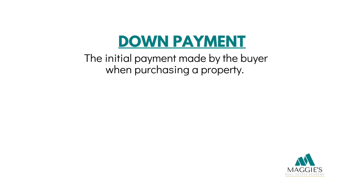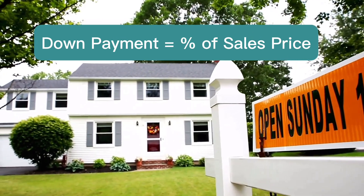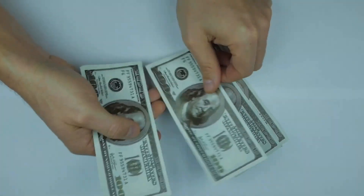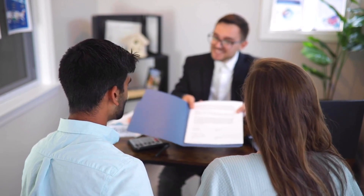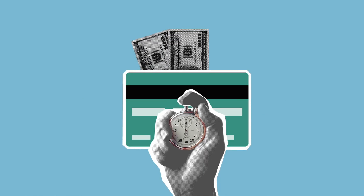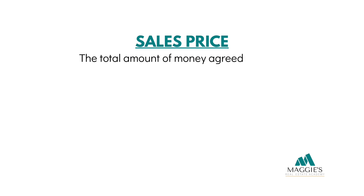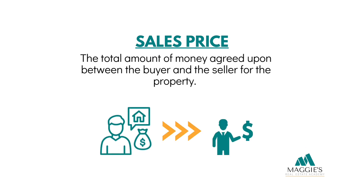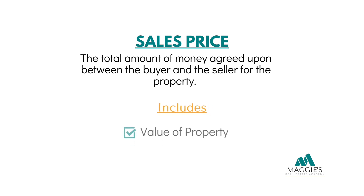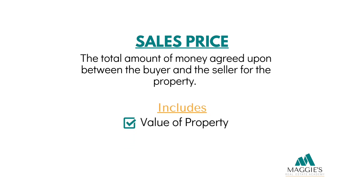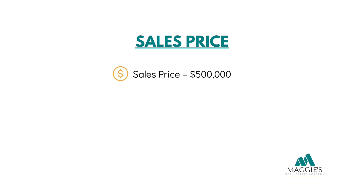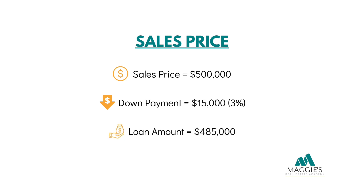A down payment is the initial payment made by the buyer when purchasing a property. It represents a percentage of the total sales price and is typically paid up front. The purpose of a down payment is to demonstrate the buyer's commitment to the purchase and reduce the amount of money borrowed from a lender. The sales price refers to the total amount of money agreed upon between the buyer and the seller for the property, including the value of the property itself along with any additional costs such as closing fees or taxes. The sales price serves as the basis for calculating the down payment and determining the loan amount needed to finance the remaining balance.